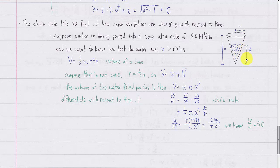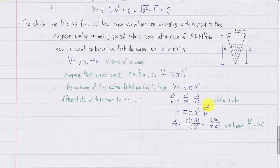Now we can differentiate with respect to time to find the rates of change of these variables. Since none of these variables are time and we're differentiating with respect to time, we're going to need to use implicit differentiation, which is the chain rule. On the left side we get dV/dt, and on the right side, using the chain rule, this is dV/dx times dx/dt.